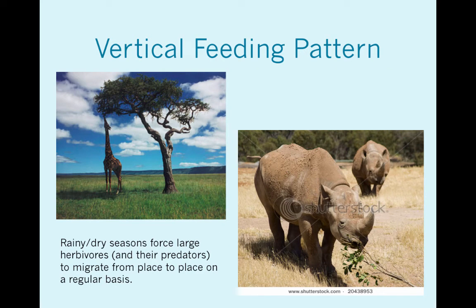Vertical feeding patterns are a way of having niche partitioning. The giraffes eat the stuff up high; the rhinos eat the stuff down low. Remember that the dry seasons force these really large herbivores to roam during particular seasons to find food and, more importantly, water — elephants, zebras, the whole nine yards. This also means that their predators will follow behind them during the whole migration.